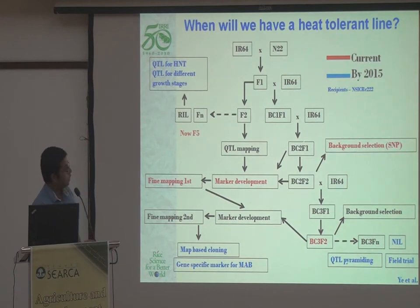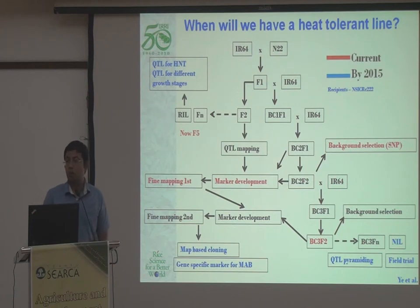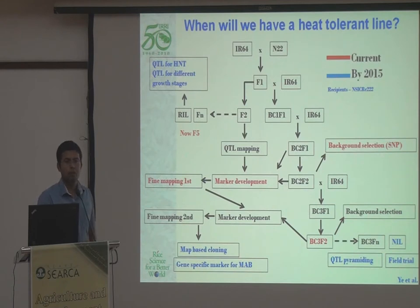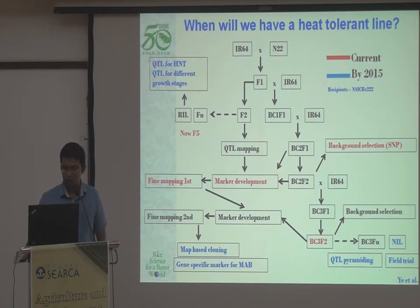As you can see from this slide, we have fine mapped both QTLs and both have been working well in a susceptible background. We hope by 2015 or end of 2015 we should have some material which you can really call heat tolerant rice to be tested in the field. Those will be the first sort of material going well.